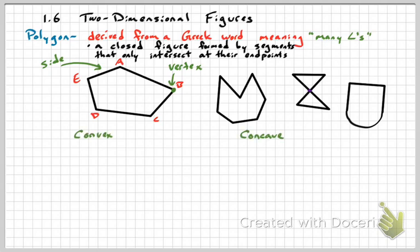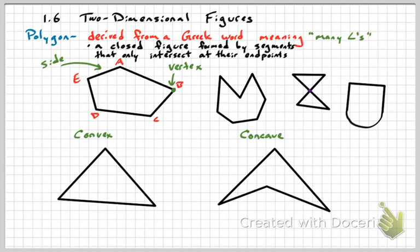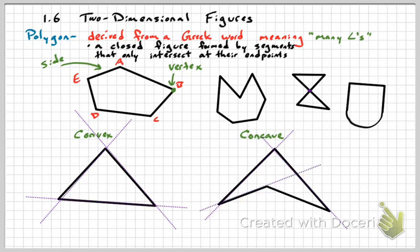Polygons can be categorized as convex or concave. A polygon is convex if, when you extend its sides, none of those extended lines pass through the interior of the figure. When I extend each side of a convex polygon, none of the dotted lines go through the figure itself.